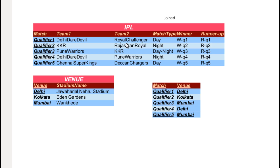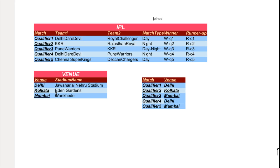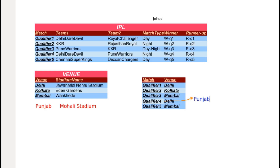Let's check out whether the anomalies are solved. Addition of new venues will not affect the IPL table, so no insertion anomalies. We can easily change the venues for a particular match without taking care of the match and the venue details from the connection table — no updation anomalies.